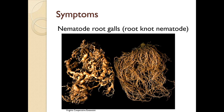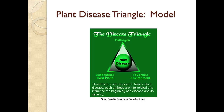Think about the pathogen being present anyway - what matters is the susceptible host plant and the favorable environment. The susceptible host plant may be something under stress or a plant that normally gets that disease. The favorable environment is the one you probably have the most control over, and usually water is involved.